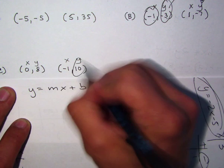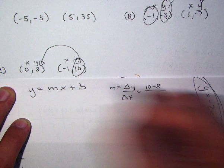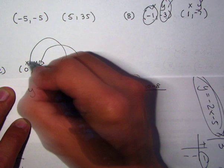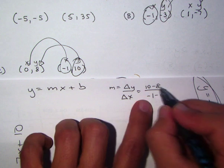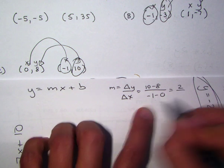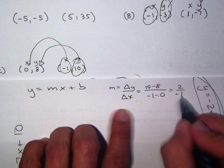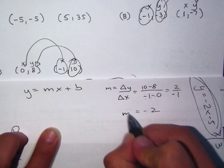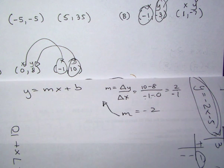Change of y. So I'm going to use 10 take away 8. Change of x, negative 1 take away 0. So 10 take away 8 is 2. Negative 1 take away 0 is negative 1. 2 divided by negative 1 is negative 2. So your M is negative 2. And then we're going to go ahead and plug it into the equation. Ready? Go.